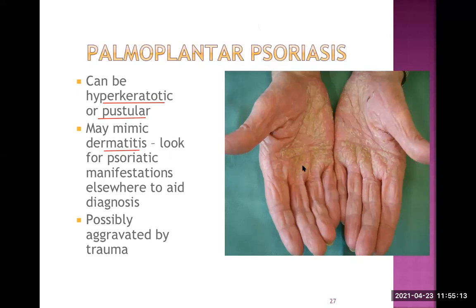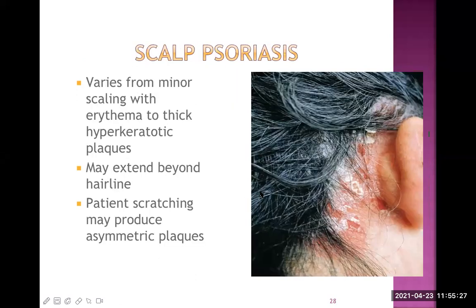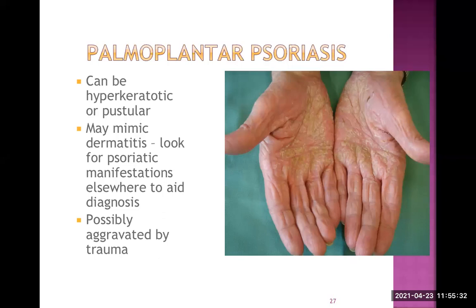The palmoplantar form is possibly aggravated by trauma, so the Koebner phenomenon may be quite prominent here. To recap: Koebner phenomenon occurs in a genetically predisposed person with psoriasis — if the uninvolved area is scratched or given slight trauma, psoriatic plaque may develop at that site which did not have any psoriatic plaque before.